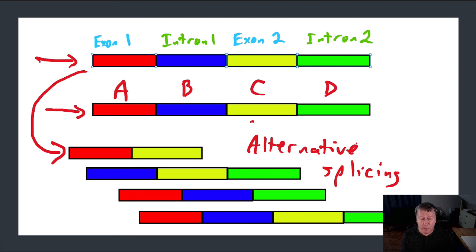This is why human beings are able to produce more than 100,000 different proteins, and yet we only have 23,000 genes because any given gene is able to produce several different proteins by using alternative splicing.